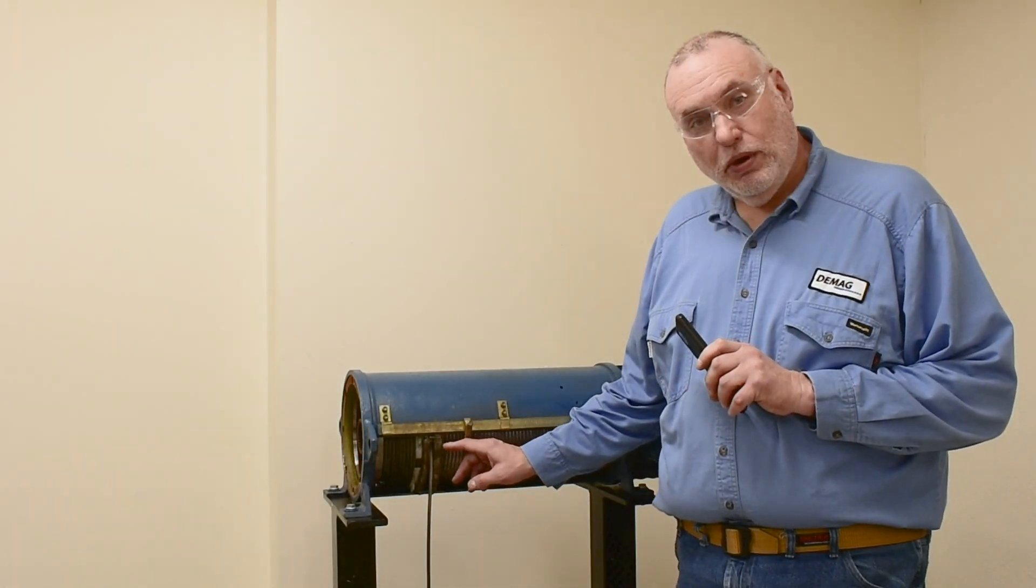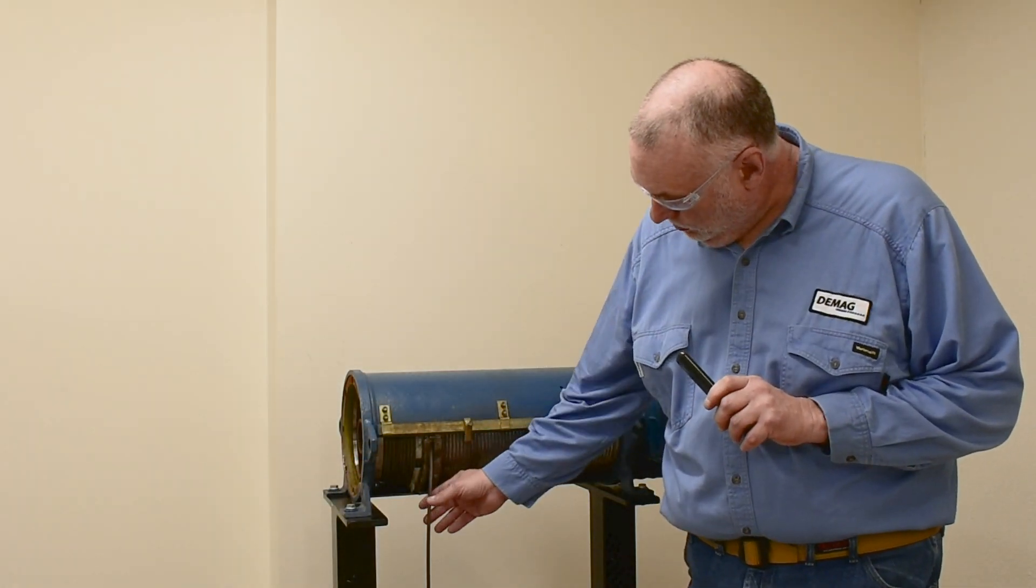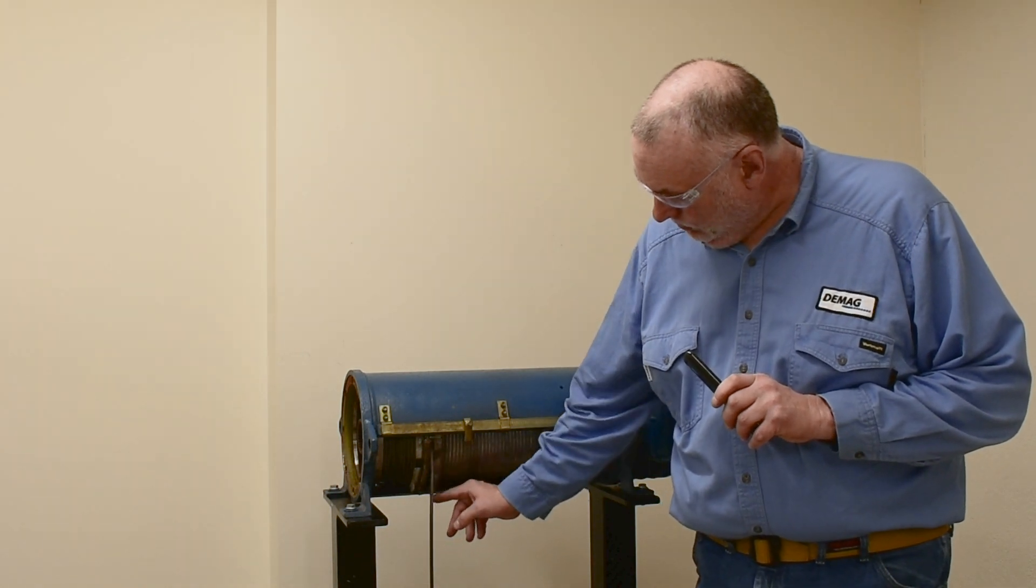On a P-Wire Rope Hoist, the rope guide is found here where the rope lead-off is. It surrounds the wire rope.